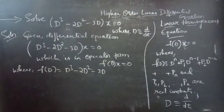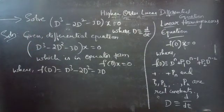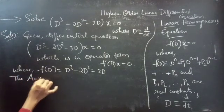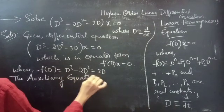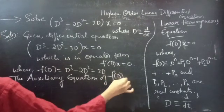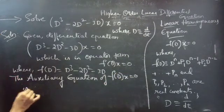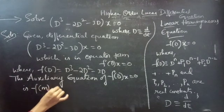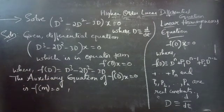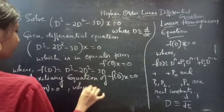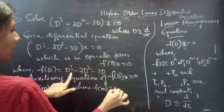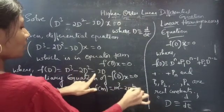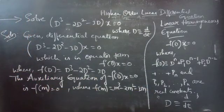Now we find the general solution using the auxiliary equation. The auxiliary equation of f(D)·x = 0 is f(m) = 0. To get f(m), simply replace D by m, giving f(m) = m³ - 2m² - 3m.